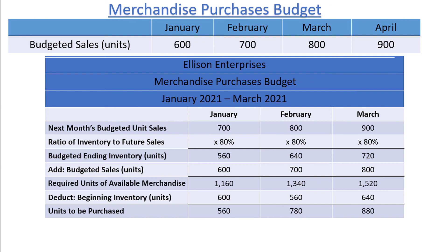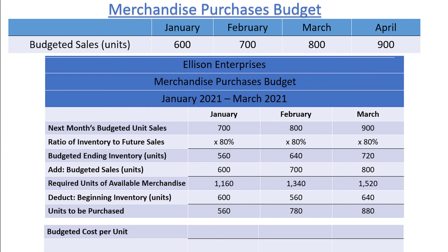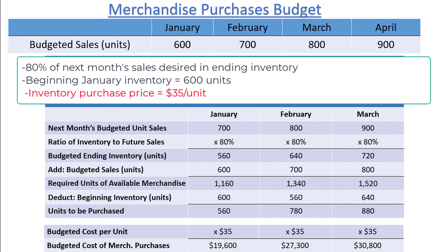All we have to do now is multiply the units to be purchased by the budgeted cost per unit of $35. This gives us $19,600, $27,300, and $30,800 as the cost of merchandise purchases for January, February, and March. And with that, we have completed the merchandise purchases budget. Check out the next video for part 2 of our master budget example, where we will complete the selling expense and the general and administrative expense budgets.